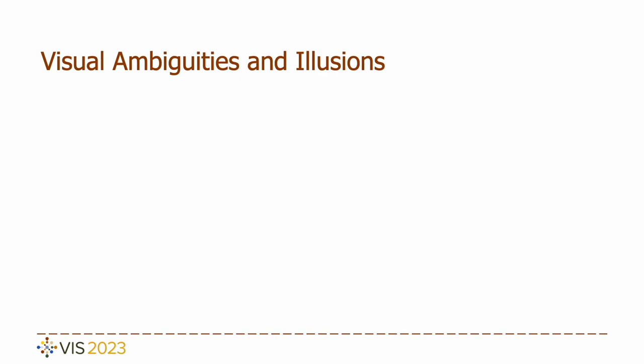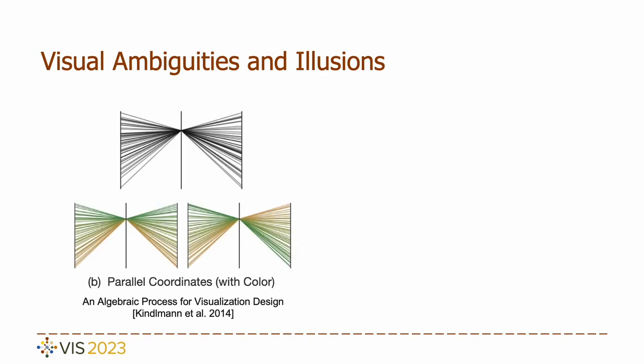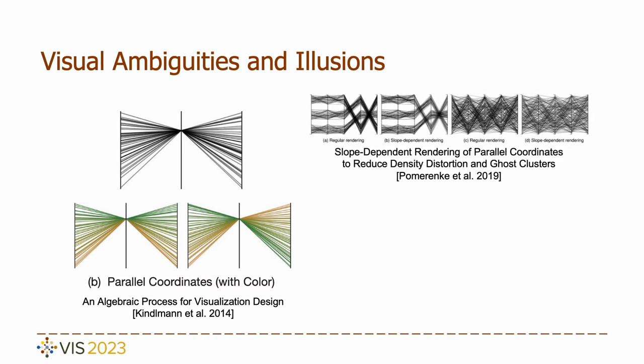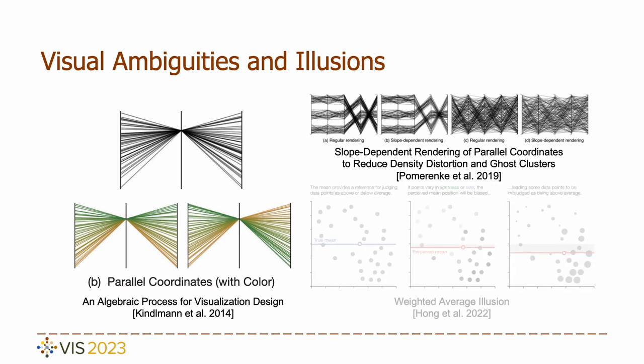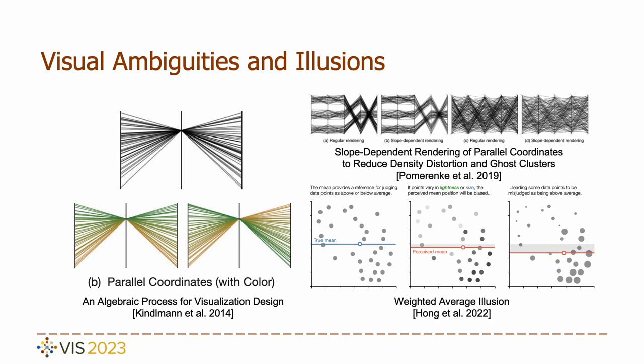Prior research has recognized visual ambiguities and illusions. Kandermann introduced the principle of ambiguous data detection in labels visualization lacking clarity, having confusers. Pomerang et al. addressed the relationship between slope and line permanence in ghost clusters, proposing a slope-dependent density correction method to reduce visual errors. Holm et al. examined the impact of size and lightness in scatter plots on perceived mean. However, there is currently no existing work dedicated to addressing visual ambiguities and illusions in line-based density plots.